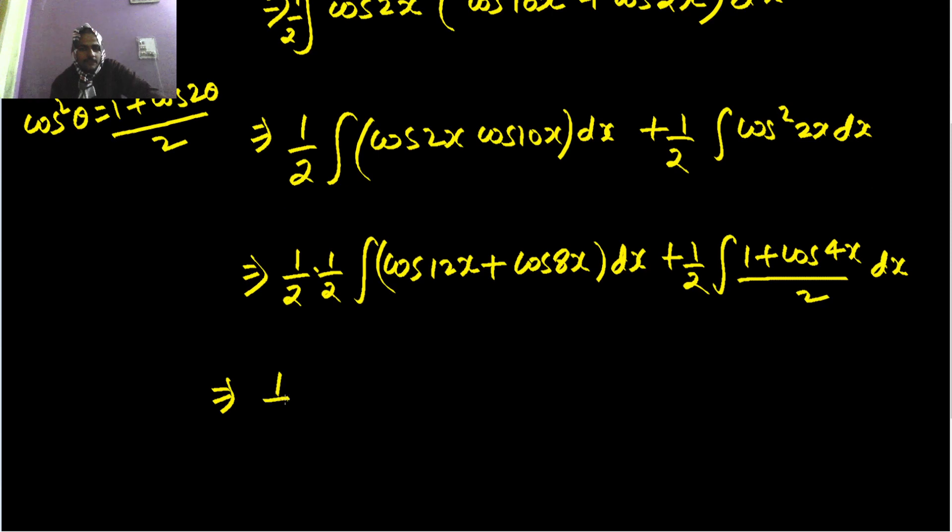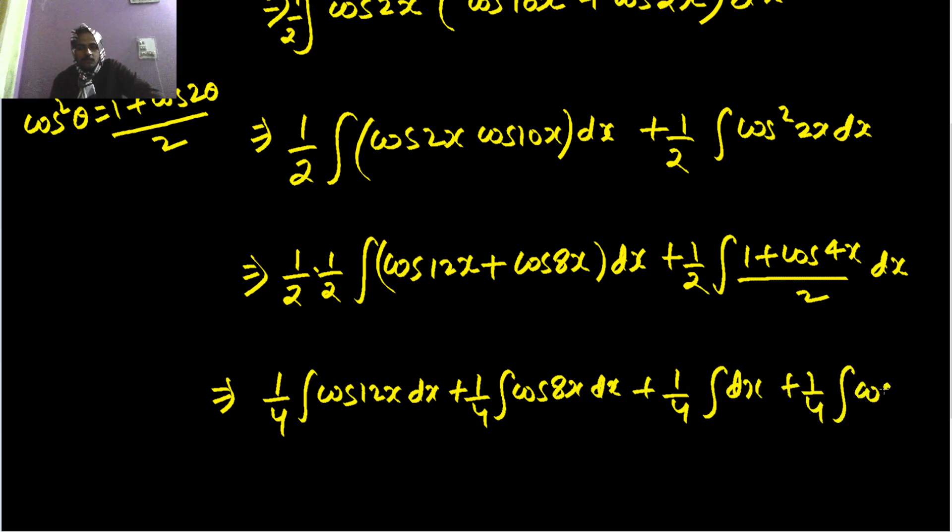So this is 1 by 4 integral cos 12x, 1 by 4 integral cos 8x, 1 by 2 into 1 by 2, 1 by 4 integral dx, 1 by 4 integral cos 4x.